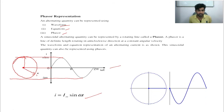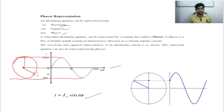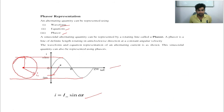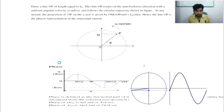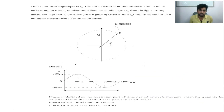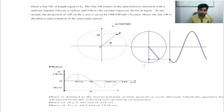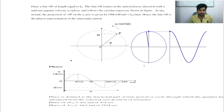If you want to add phasor I1, it will start here and extend like this. Alternating quantities represented by a rotating line are called a phasor. Here is the circle diagram — this is the rotating line, also called a phasor.